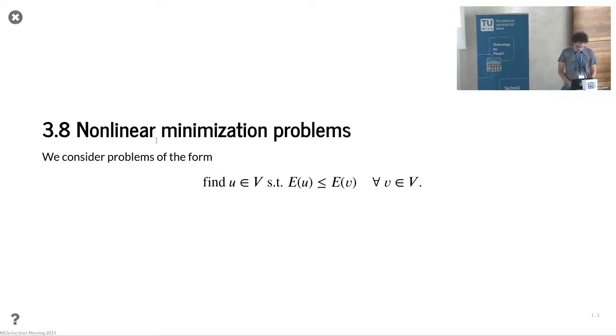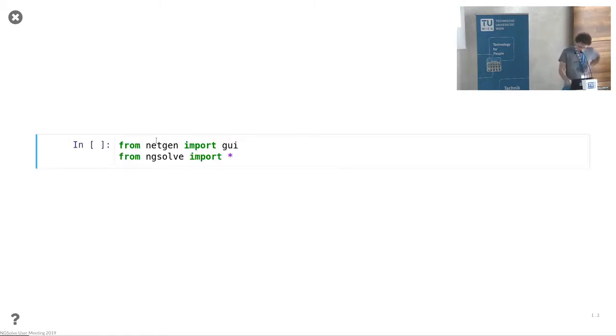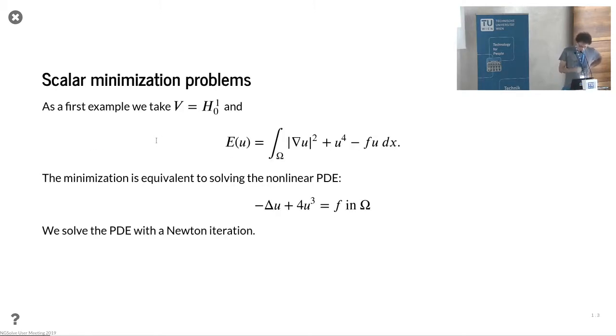Okay, the last part is nonlinear minimization problems. Now you want to formulate your problem as a minimization problem, so you have a functional like this, which leads to having essentially u to the 4 here.